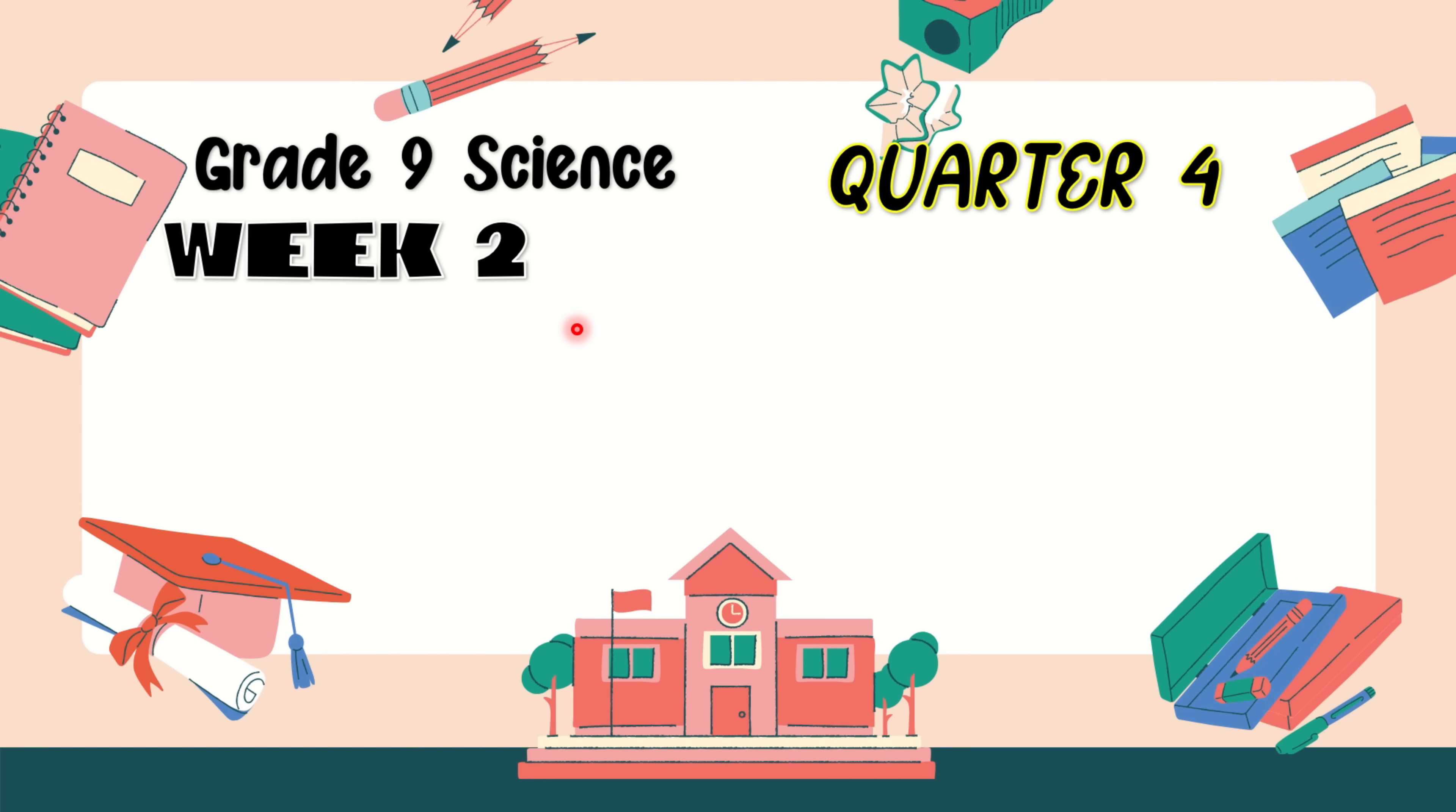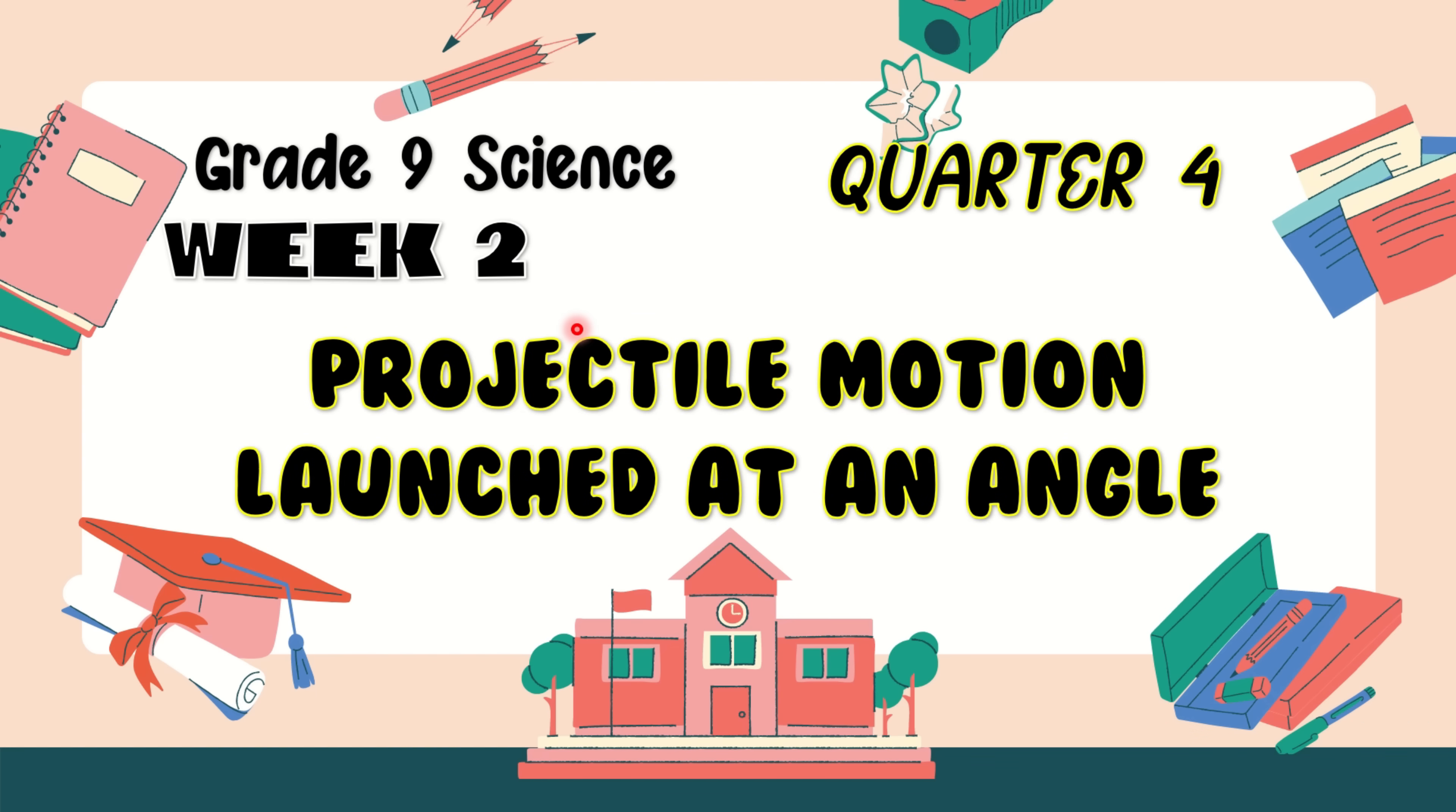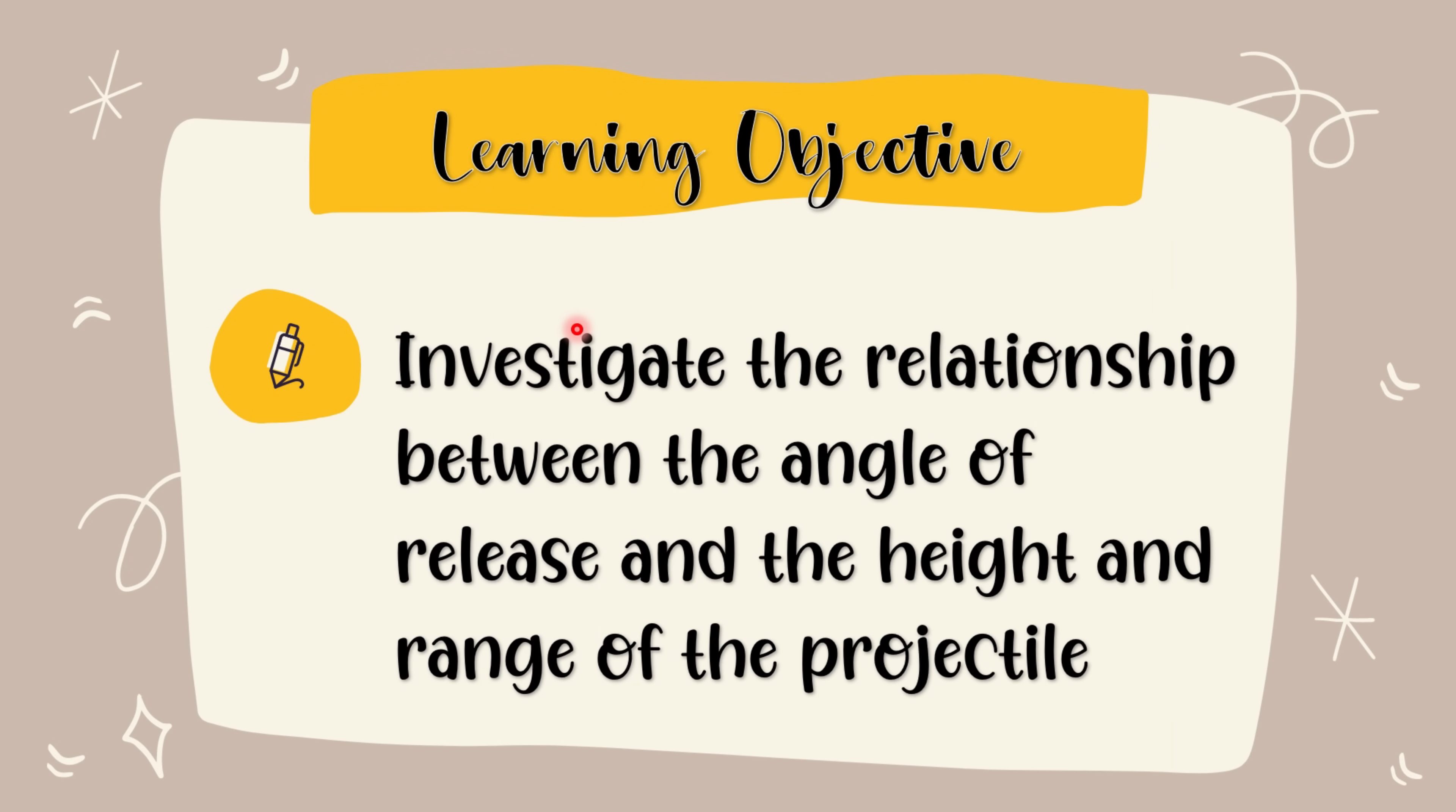We are now going to have Grade 9 Science Quarter 4 Week 2 lesson, which is all about projectile motion launched at an angle. Here's our learning objective: Investigate the relationship between the angle of release and the height and range of the projectile. So get ready to learn this lesson and keep on watching!